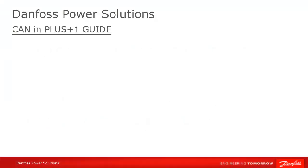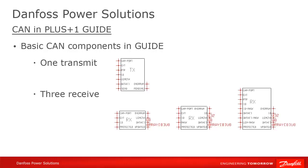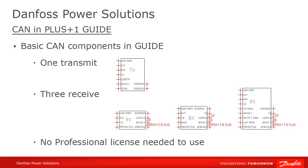You'll find that there are four low-level CAN components that you can use in your guide programs: one transmit component and three receive components. Note that these are components, not higher-level function blocks, so you do not need a professional license to use them in guide programs.